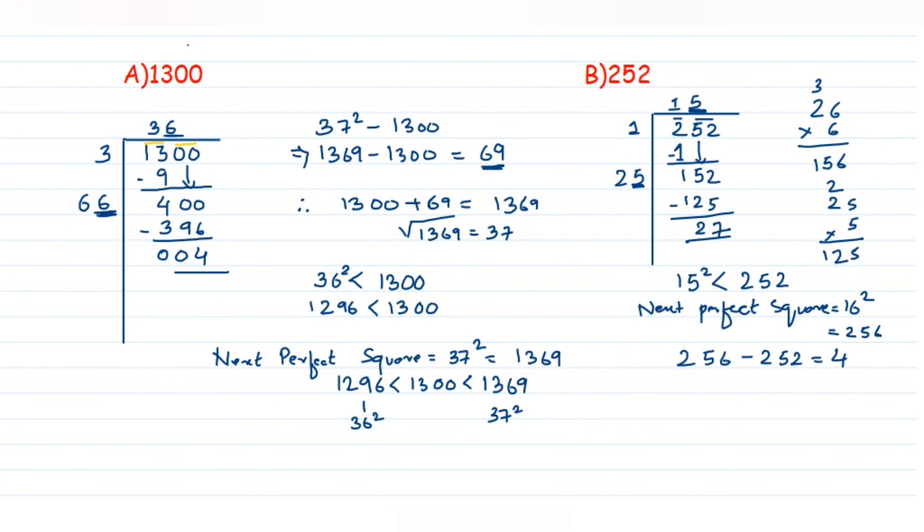So how we're going to conclude? Therefore, 252 plus 4 is nothing but 256, which is a perfect square, and square root of 256 is 16. That's it.